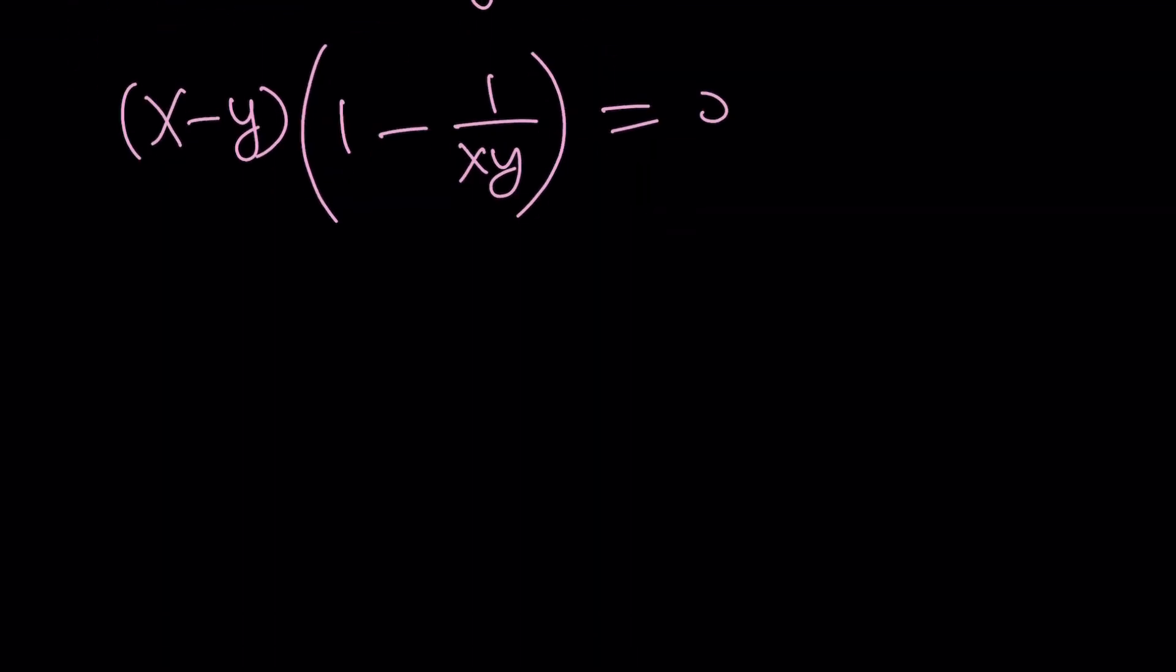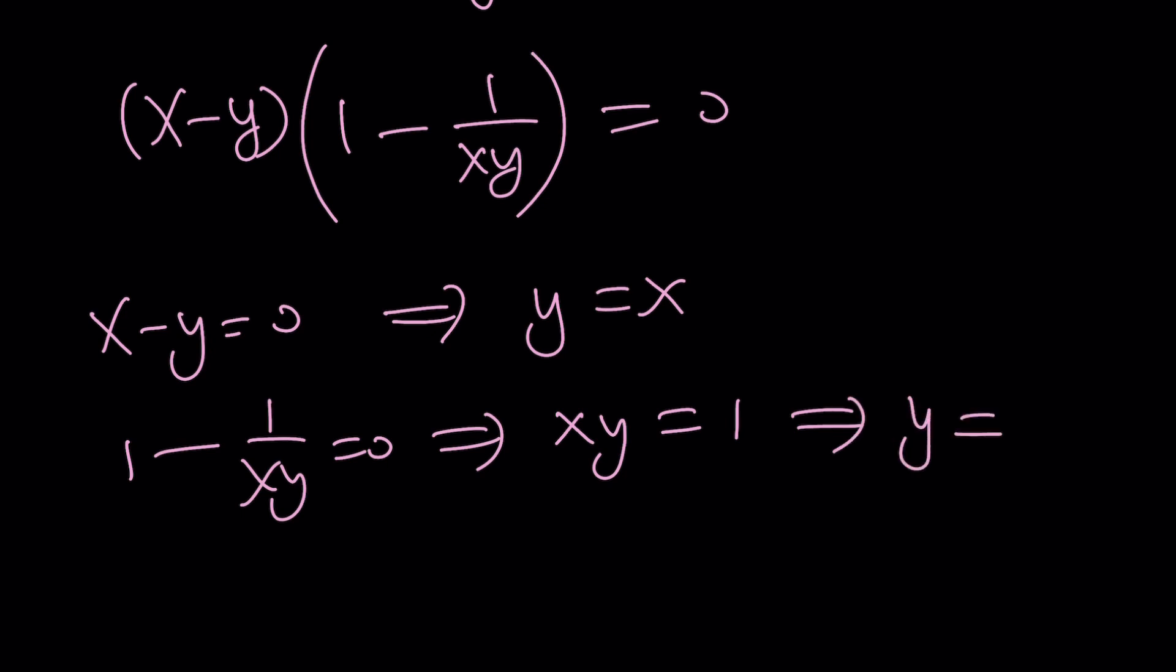So this means what? x minus y equals 0, which means y equals x. The second thing is 1 minus 1 over xy equals 0, which means xy equals 1. Or y equals 1 over x. So we're going to consider both of these cases for the second method.